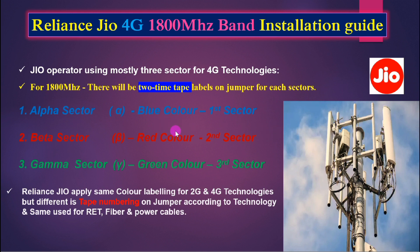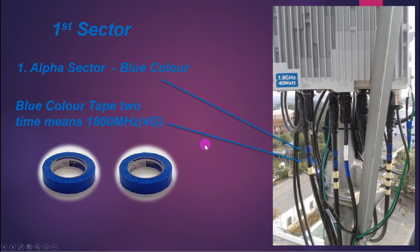So we can know what technology is running on site from the cable labels. Looking at the Jio infrastructure, you have to mark two-time tape on cables for 1800 megahertz. In this example picture we can see they have already marked two-time blue tape. Blue tape means this is our Alpha sector — the first sector. We can also see it labeled 1.8 GHz, which is 1800 megahertz.